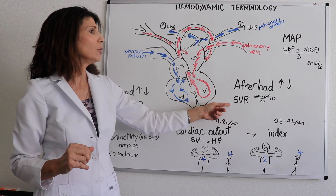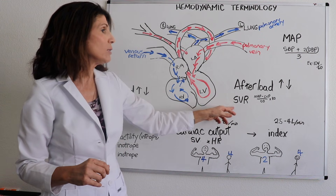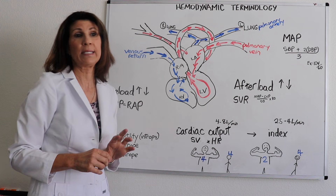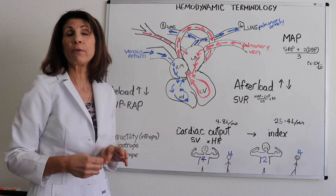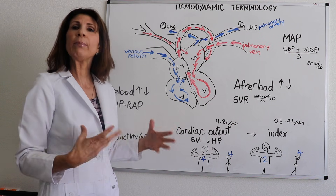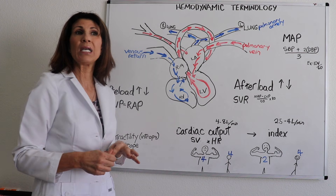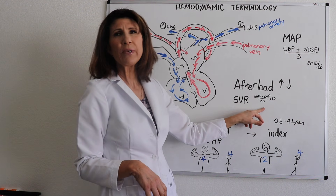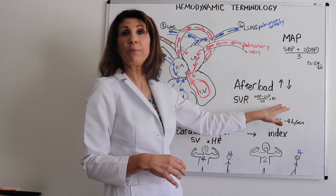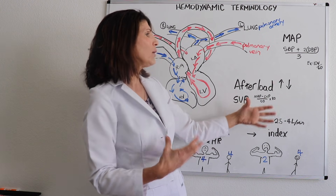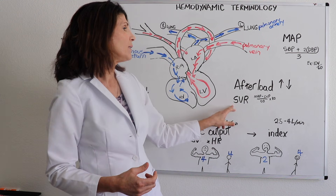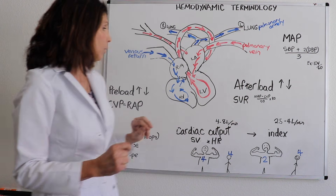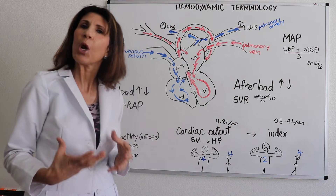Can we measure afterload? Absolutely — with something called the systemic vascular resistance (SVR), which is the measurement of afterload. We can only do that with invasive monitoring devices, such as the PA catheter or Swan-Ganz catheter. You don't really need to know the SVR formula, just that it factors in the MAP, the CVP, and cardiac output to arrive at that number measuring afterload.